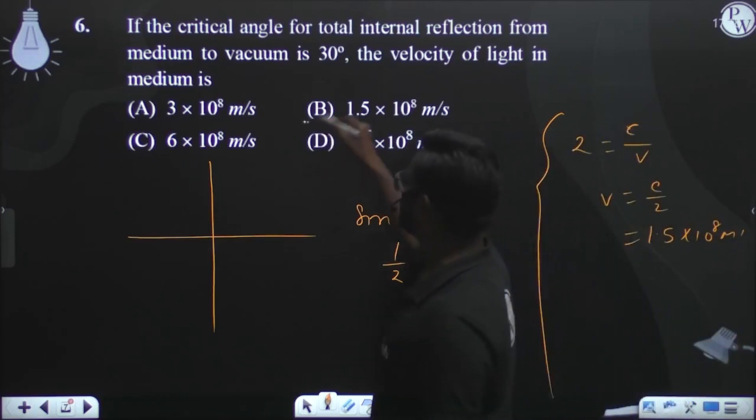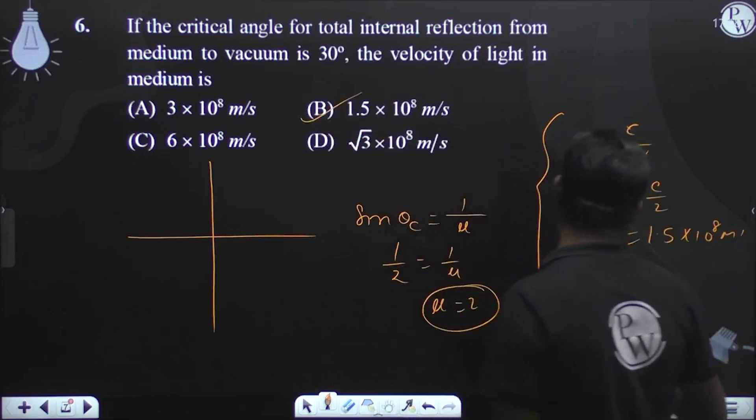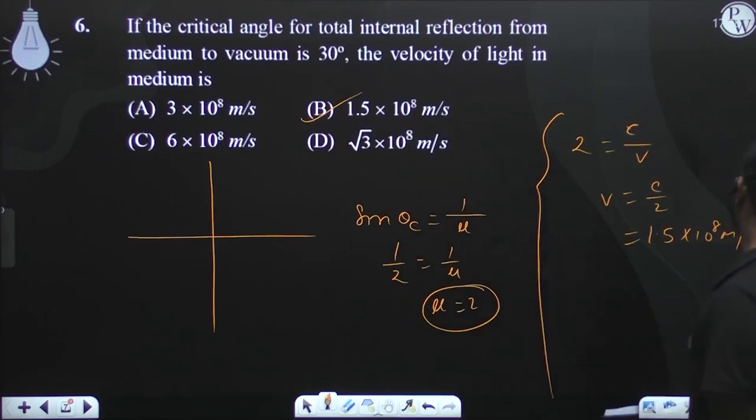The correct option is B — 1.5 × 10⁸ meter per second.